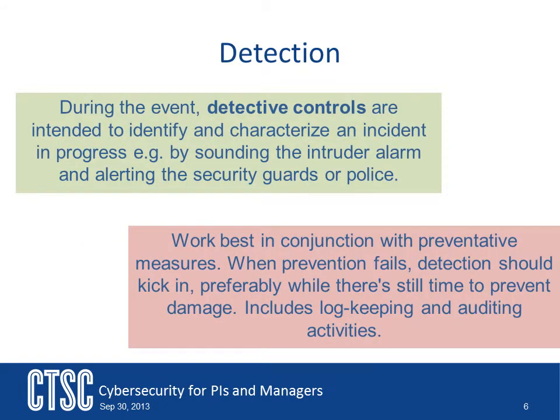Detective controls usually come into play during an event. These controls monitor activity to identify instances where practices or procedures were not followed. For example, an intrusion detection system will monitor the system looking for activities that don't seem right, which might indicate someone has compromised the system. Note that the person has already gotten past the preventative controls and is into the system. Preventative and detective controls work hand in hand. Since there is no perfect preventative control, a system must have some detective controls in place.